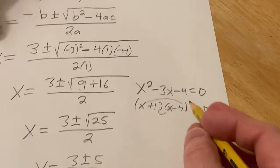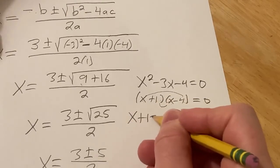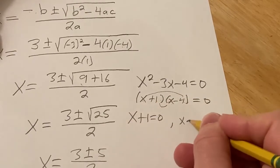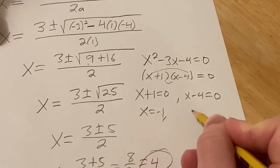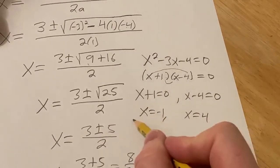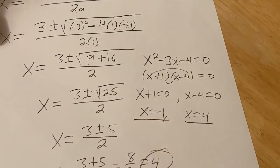And so then you have a product equal to 0. So you set each piece equal to 0. So in here you have x equals negative 1, x equals 4. And so now those are the answers.